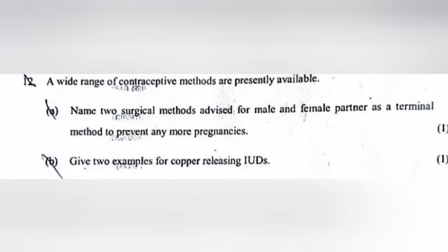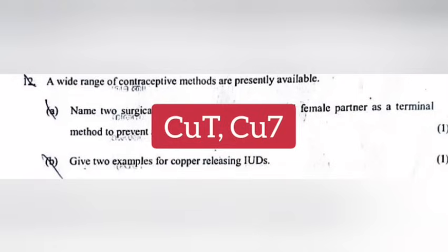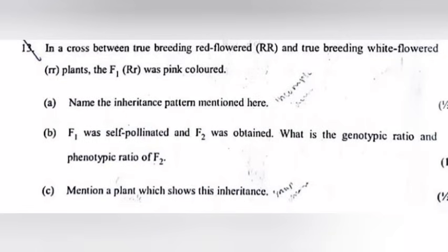Give two examples for copper-releasing IUDs. Answer: CuT and Cu7.